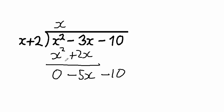How many times does x plus 2 go into negative 5x? Well, x goes into negative 5x negative 5 times, and we put down the negative 5. So now negative 5 times x plus 2 gives us negative 5x minus 10. And when we minus this term off the remaining term, we get 0 and 0.